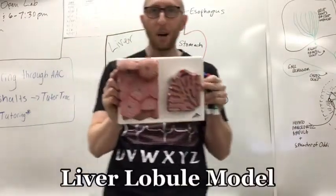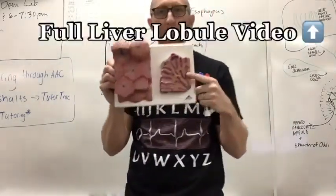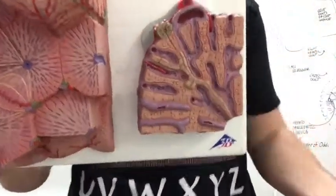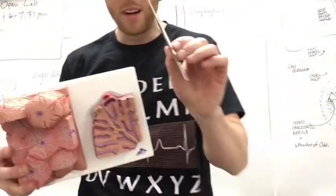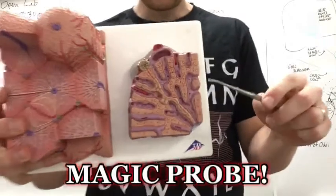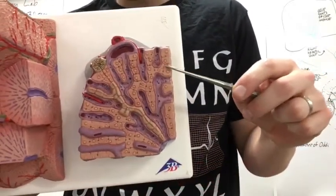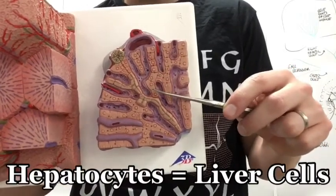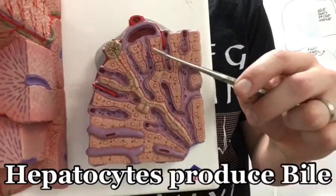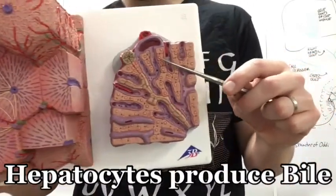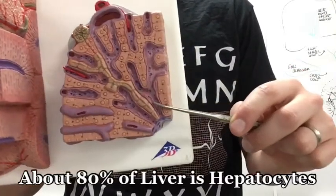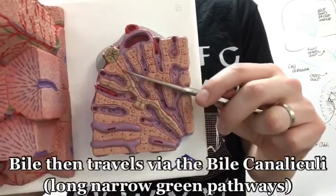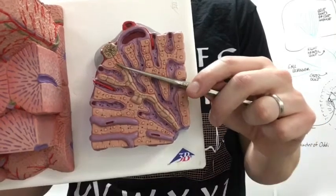Now we got the liver lobule model. Check out my other video on the liver lobule model. But if I zoom in here real close for you, and I grab the magic probe, and I point at these cells within the liver. These are called hepatocytes. And this is where bile is actually produced. Like real close at these cells, they are all throughout the liver. And what happens is bile is produced on those, and then it travels down this green narrow pathway called the bile canaliculi.